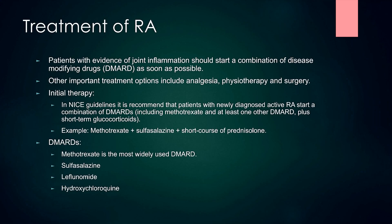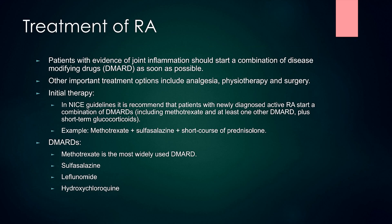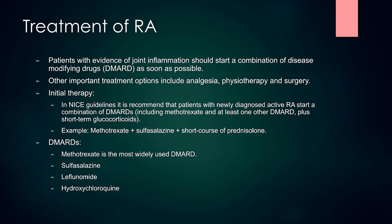How do we treat rheumatoid arthritis? Patients with evidence of joint inflammation should start a combination of DMARDs as soon as possible. NICE guidelines recommend that patients with newly diagnosed active RA start a combination of DMARDs including methotrexate and at least one other DMARD, plus short-term glucocorticoids — for example, methotrexate plus sulfasalazine plus a short course of prednisolone. The common DMARDs are methotrexate, sulfasalazine, leflunomide and hydroxychloroquine, with methotrexate being the most commonly used.